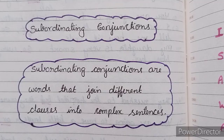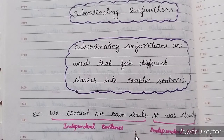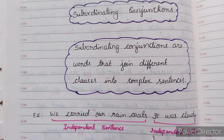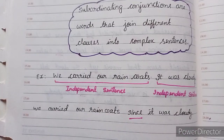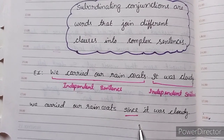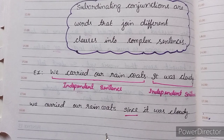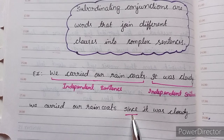Now let's learn about subordinating conjunctions. Subordinating conjunctions are words that join different clauses into complex sentences. For example: 'We carried a raincoat. It was cloudy.' Here we see two independent sentences. Now look: 'We carried a raincoat since it was cloudy.' The two sentences are connected by the subordinating conjunction 'since.'